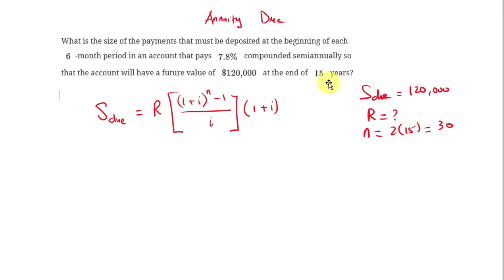And the i-value, the i-value in this case would be the interest rate 7.8% or 0.078, and then we divide that by 2 because the interest rate is compounded semi-annually, so two times a year. So we divide that by 2, and that would be 0.039.